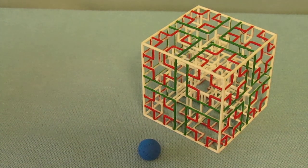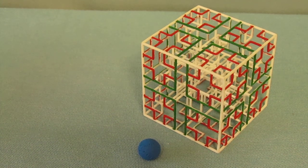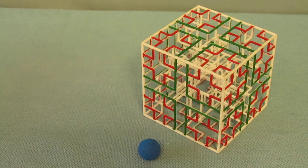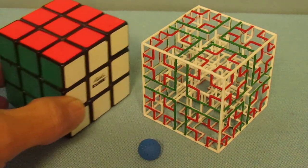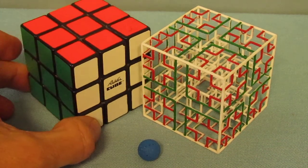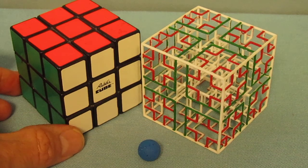The dimensions for this maze is 56 millimeters on each side or about 2 and 1/4 inches. This is the size of a Rubik's Cube. And you can see here is a Rubik's Cube for a size comparison.